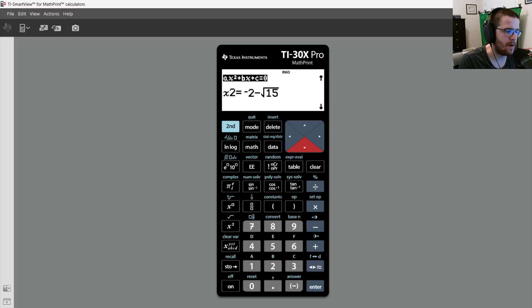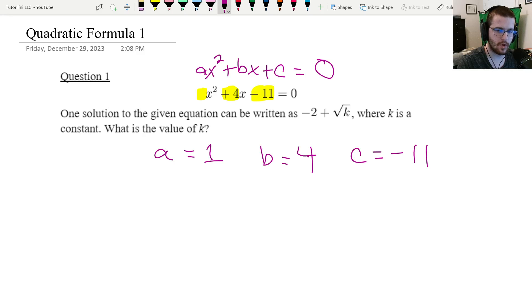If you recall from the problem, it wanted the one with a plus in front of the square root, so this is the one we're going to use. Okay, let's go back to the board and lock in our answer. Okay, so remember one of our solutions was negative two plus square root of fifteen. If we hold that up to negative two plus square root k, we can see that k is equal to fifteen, so that would be our answer for this one.